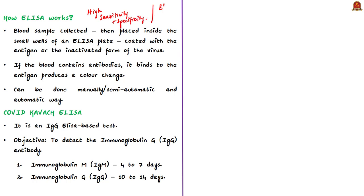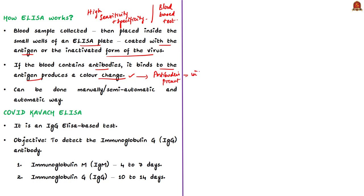The test involves drawing blood from the person to be tested. The sample is placed in small wells of an ELISA plate, which are coated with the antigen or the inactivated form of the virus. If the blood contains antibodies, it binds to the antigen present in the well, after which a substrate solution is added. This reaction produces a color change — if there is a color change, antibodies are present, meaning some infection is present. If there is no color change, there are no antibodies and no infection.